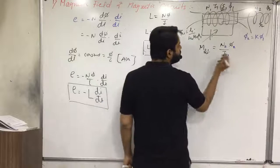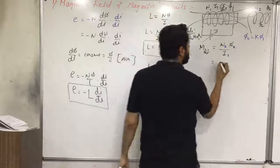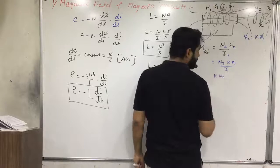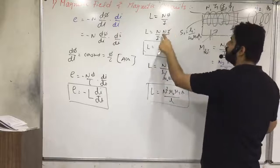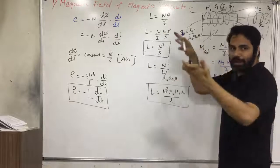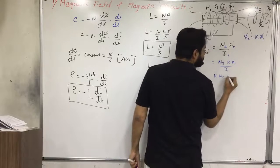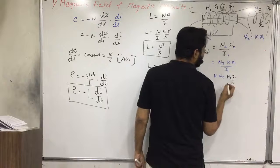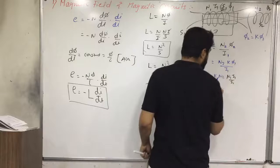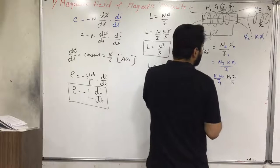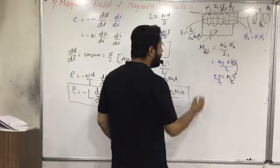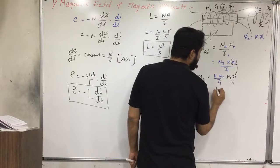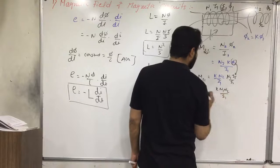So mutual inductance M₂₁ = N₂ × φ₂ / I₁ = N₂ × k × φ₁ / I₁. Substituting φ₁ = N₁I₁/S₁, the I₁ cancels, giving M₂₁ = k × N₁N₂ / S₁.